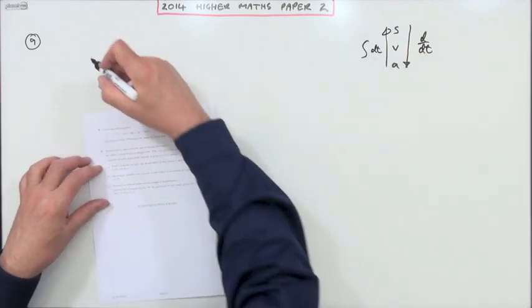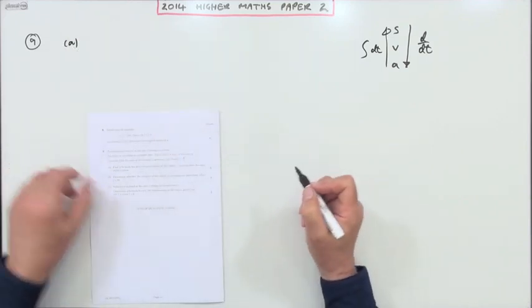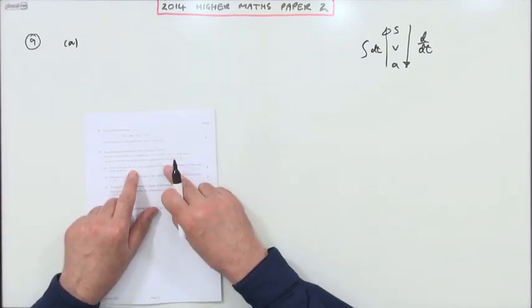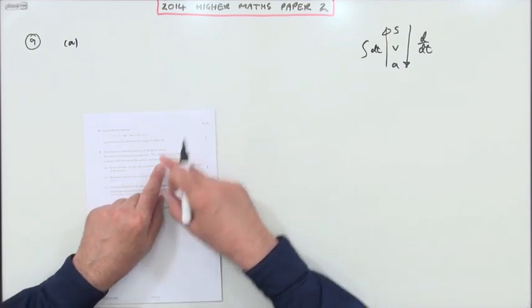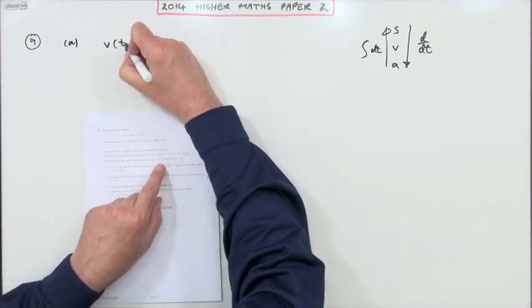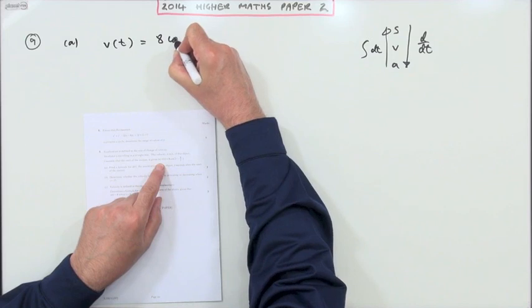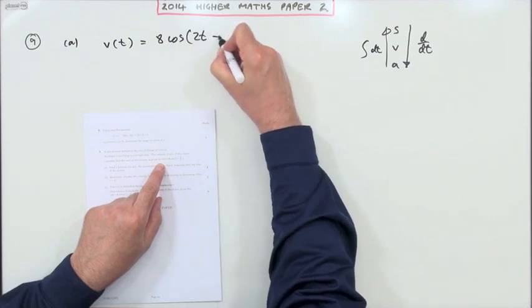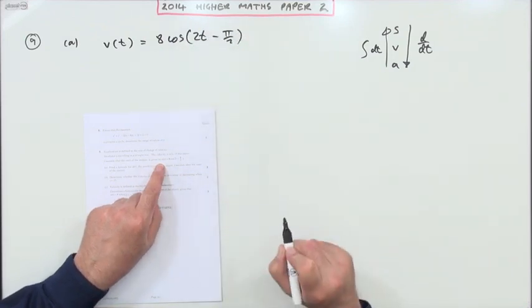So what does it say? For the first one, part a. Find a formula for the acceleration, and it gives you the velocity. So v(t) is 8 cos(2t - π/2), and it wants the acceleration.